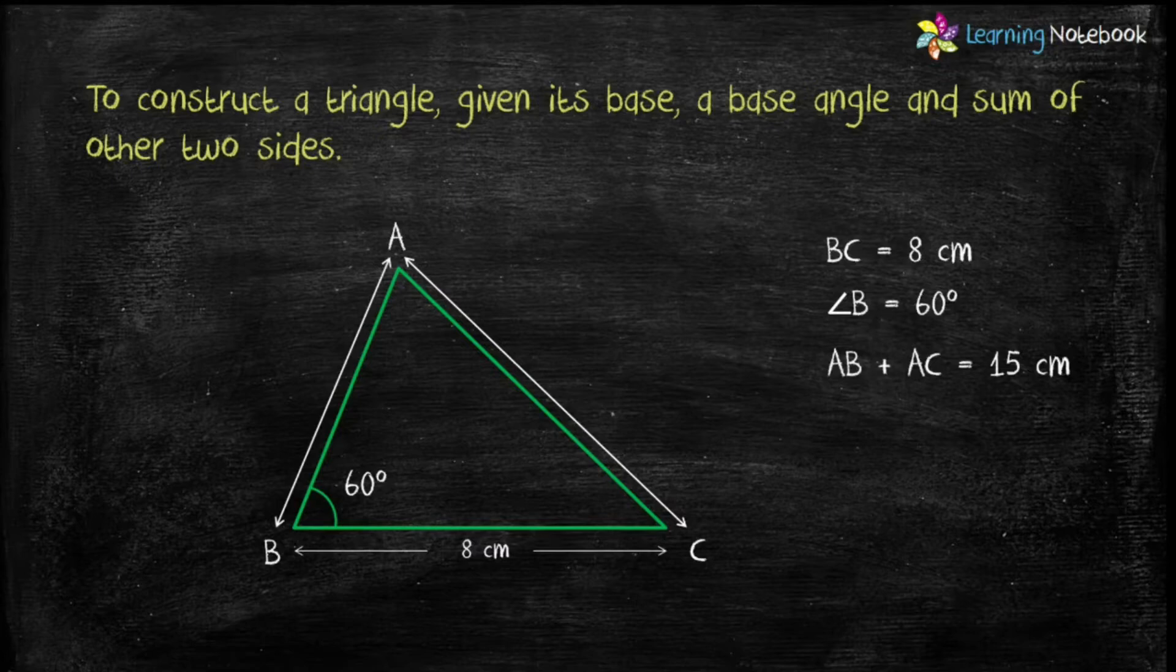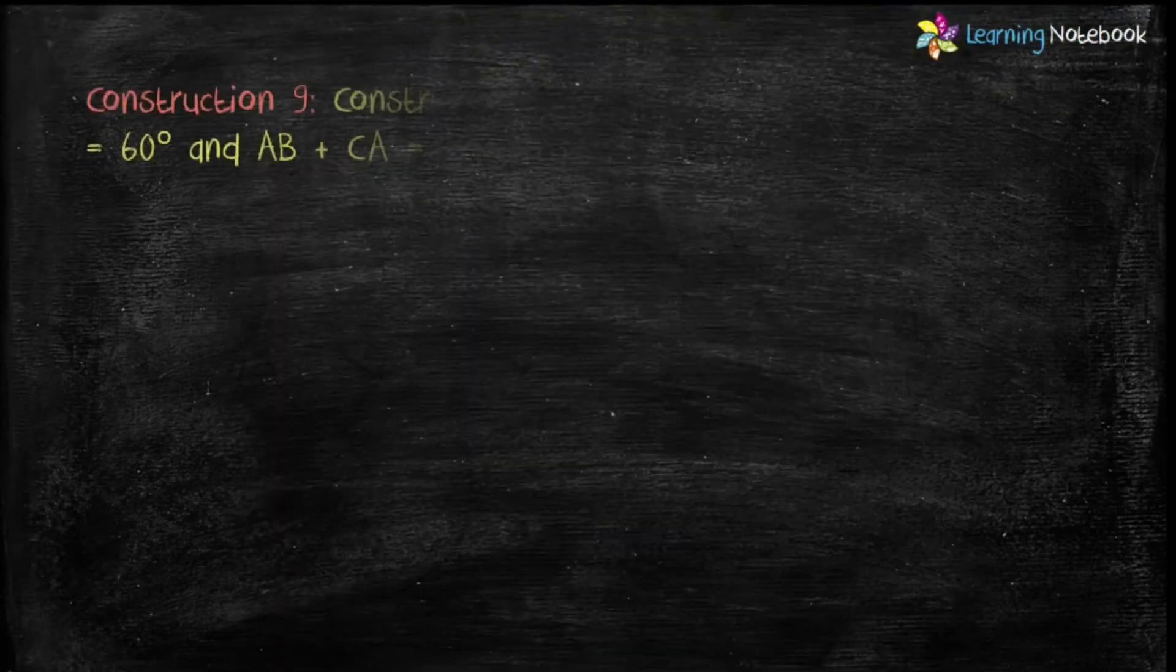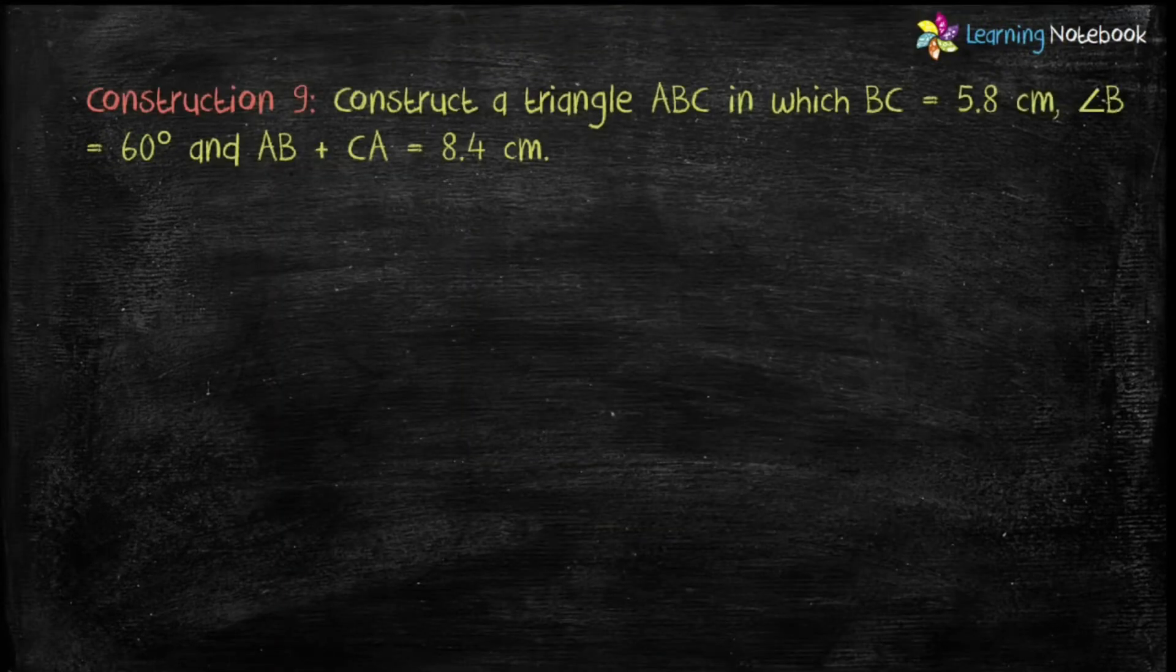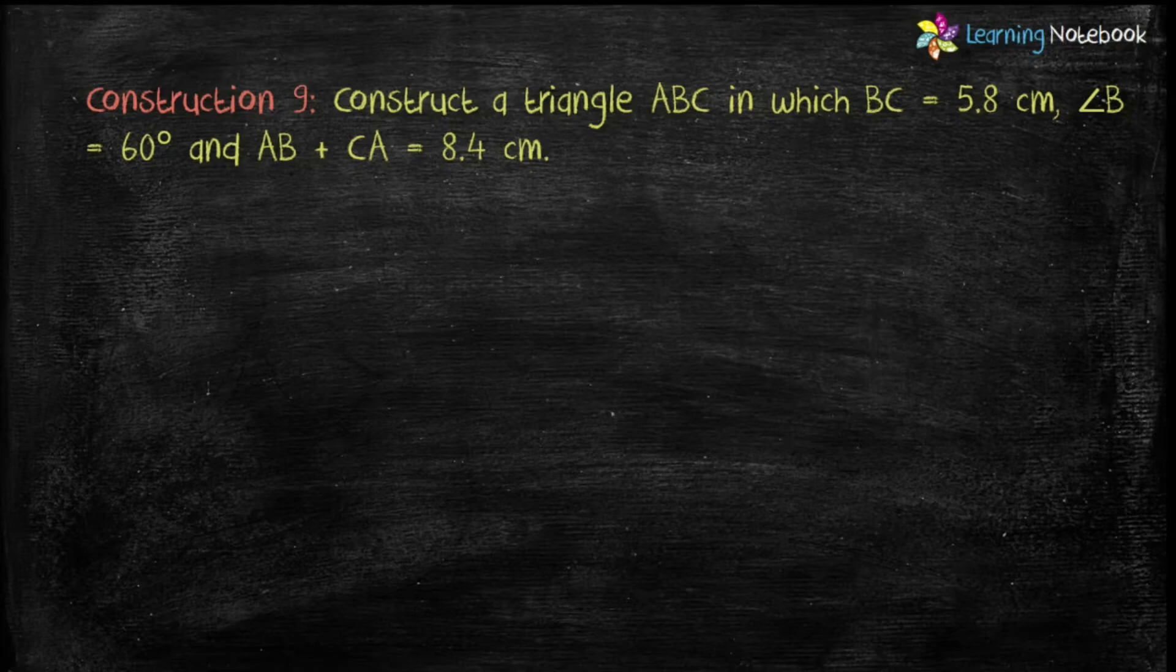Now, let's see how to construct a triangle when base, base angle, and sum of other two sides are given. The question is, construct a triangle ABC in which BC equals to 5.8 cm, angle B equals to 60 degree, and AB plus CA equals to 8.4 cm. So, let's construct it.